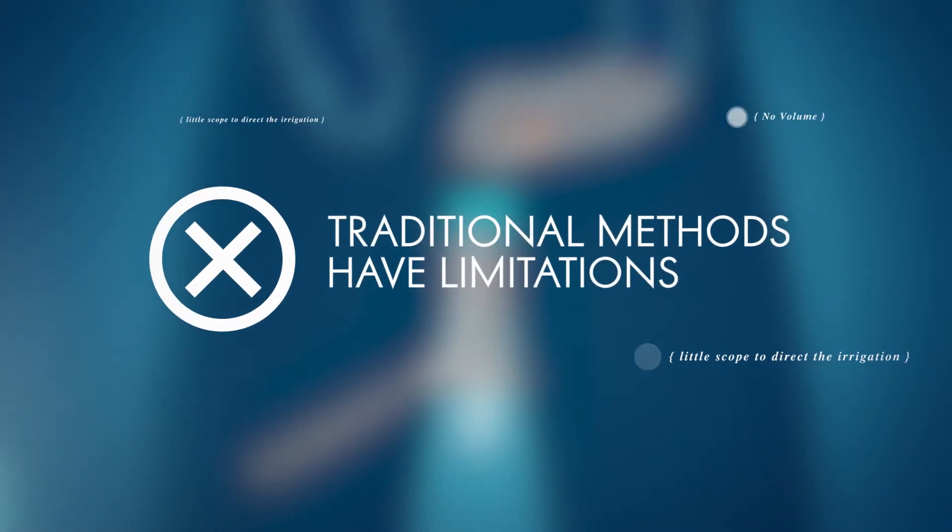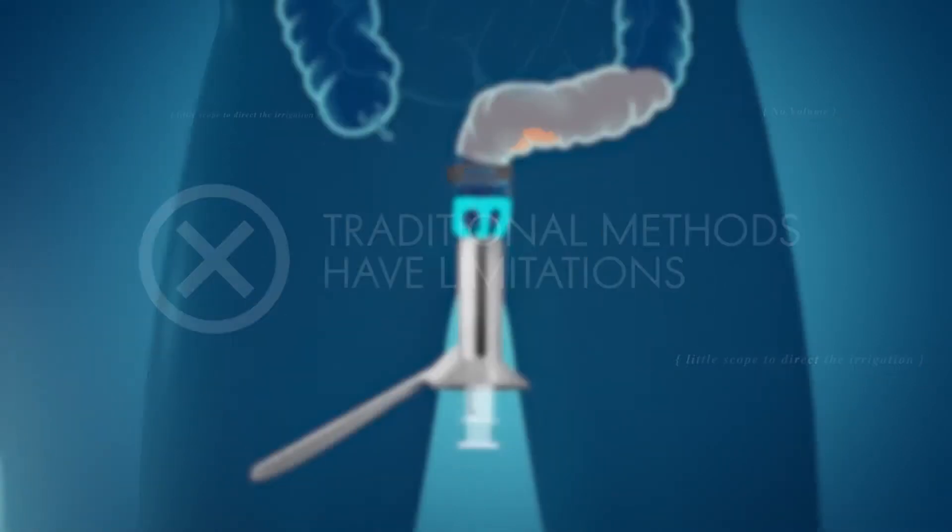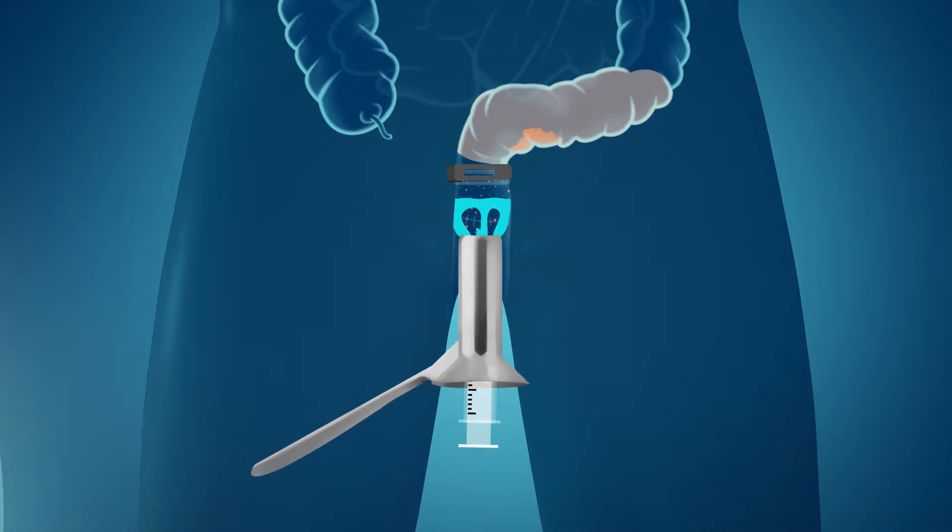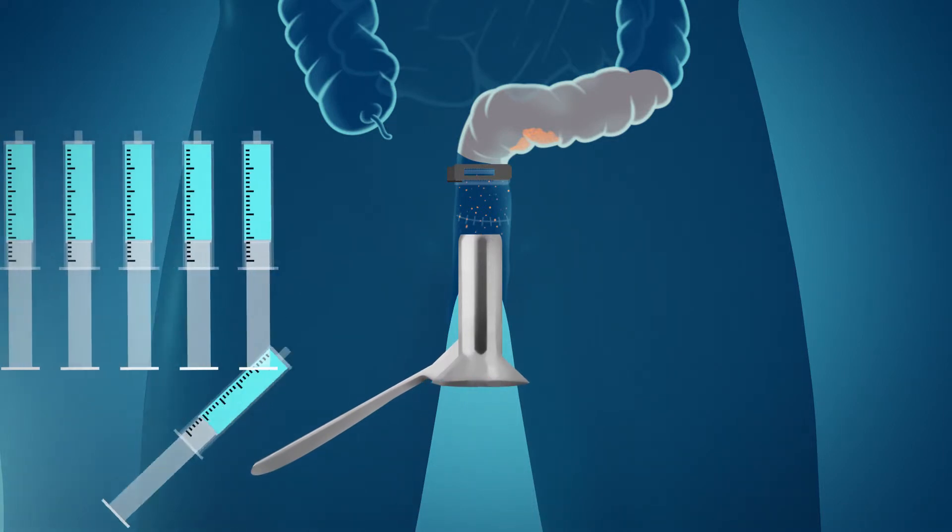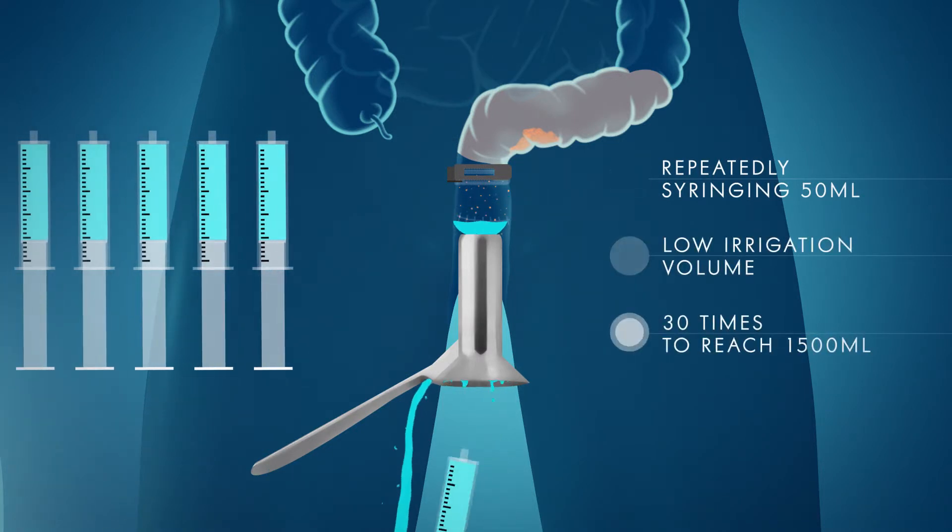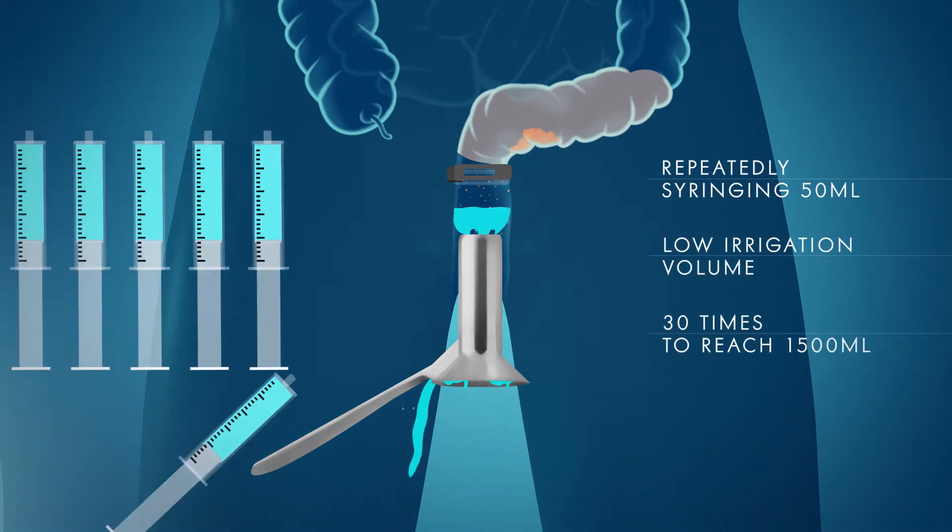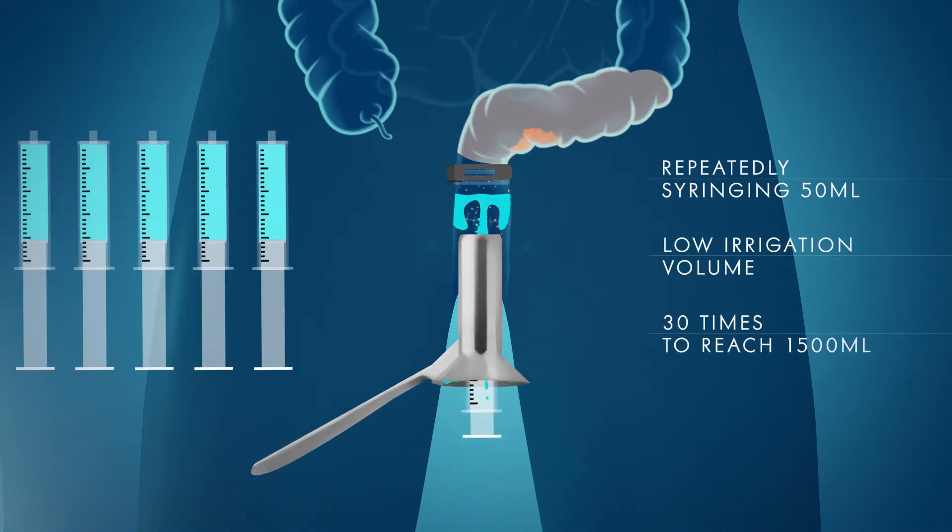However, these methods have limitations. There is little scope to direct the irrigation to all areas of the rectal stump while the fluid entry and exit is uncontained, increasing risk of spillage and contamination. It is also difficult and time-consuming to use volumes in excess of 250 ml, particularly when using a syringe.